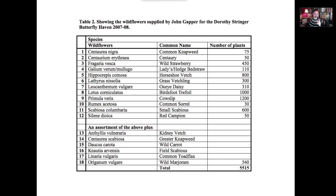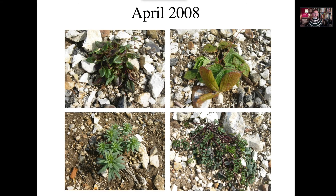We planted them and they successfully started to grow. Here's sorrel, which is the host plant of the small copper; strawberry, the host plant of the grizzled skipper butterfly; down at the bottom, horseshoe vetch, the host plant of the chalk hill blue and the adonis blue; and then toadflax, the host plant of the toadflax brocade moth. All of these things doing very well.